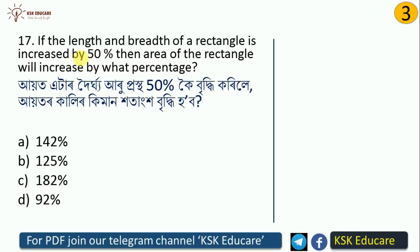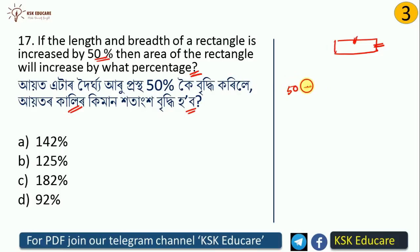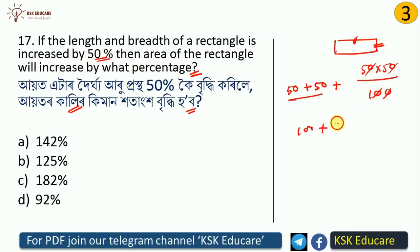If the length and breadth of a rectangle are both increased by 50%, by what percentage will the area increase? Using the same formula: 50 plus 50 plus (50 times 50 divided by 100) equals 100 plus 25 equals 125. The area increases by 125%. Option B is correct.